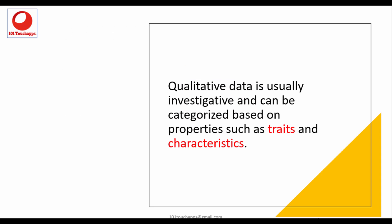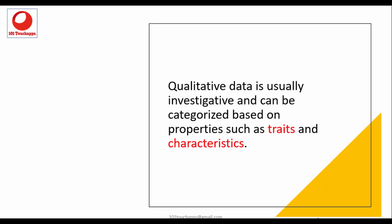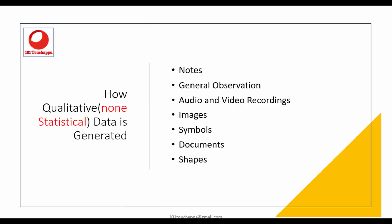Now, qualitative data is usually, it's questionable. It's investigative and it can be categorized based on certain traits or characteristics. Just like we saw on this little desk right here, we look at the characteristics of the desk and we can actually get that qualitative data. Now we can generate qualitative data through taking notes, general observation, through audio and video recordings, like I'm recording right now, I'm generating qualitative data, which is non-statistical. I can't assign a number to it. We can also see qualitative data from images like my company logo image. We can look at symbols, documents, shapes. These are all qualitative data and they are descriptive.